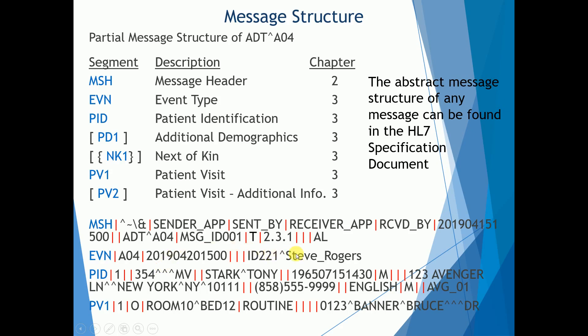I believe this field is the operator — the person who actually entered the information. When you're looking at different message types or trigger events, you can look at the message structure for that trigger event. All of these are defined in the HL7 specification document. Square brackets mean that segment is optional, and curly brackets mean that segment is repeatable — it can appear more than once within the message.